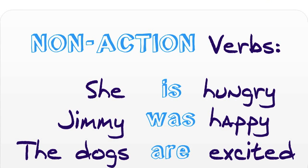There are also non-action verbs. These verbs do not show a particular action. A common non-action verb is the verb 'to be.' For example, 'she is hungry' — is is part of the verb to be. 'Jimmy was happy' — was is part of the verb to be. 'The dogs are excited' — are is part of the verb to be.